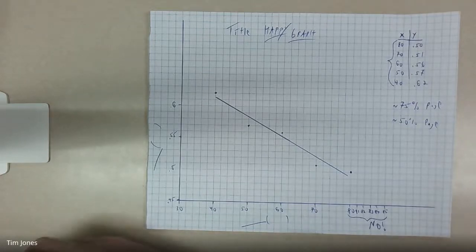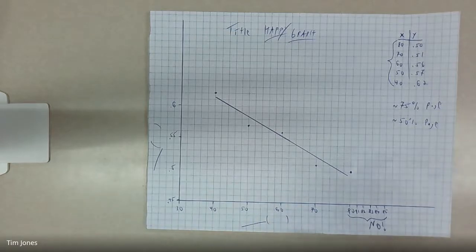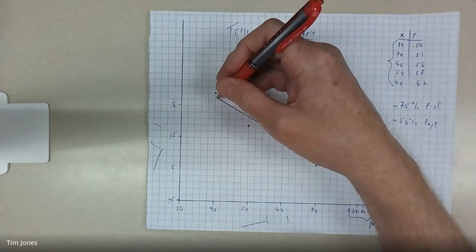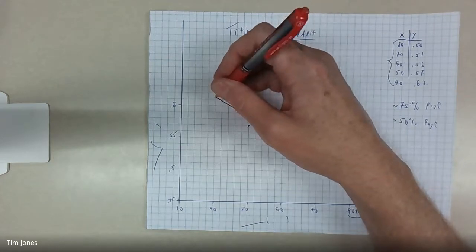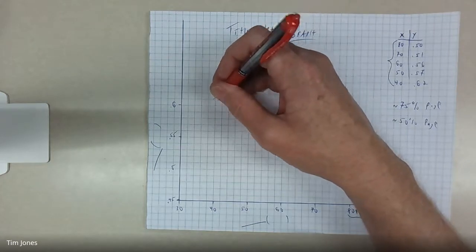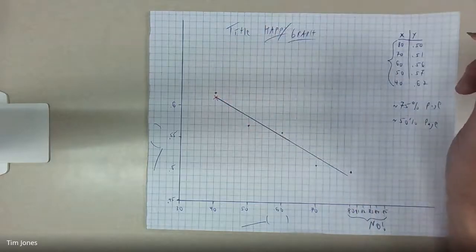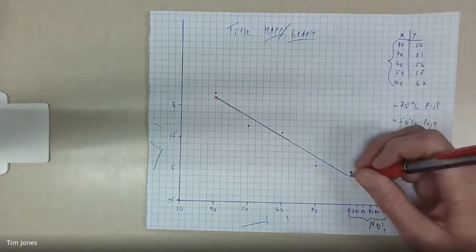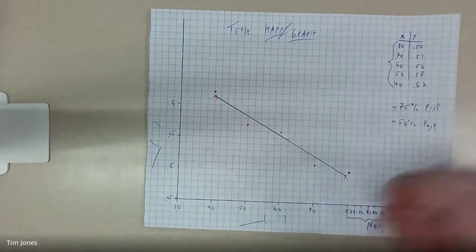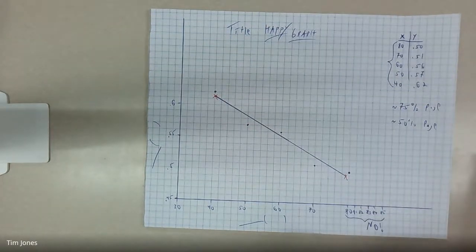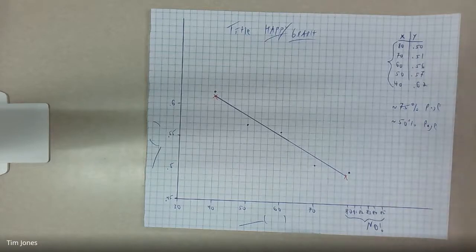The line is nowhere close to touching any of the dots — and that's fine. If you needed to find slope, you'd pick something way over on one end and something on the other end, and ignore the data points when calculating your slope.